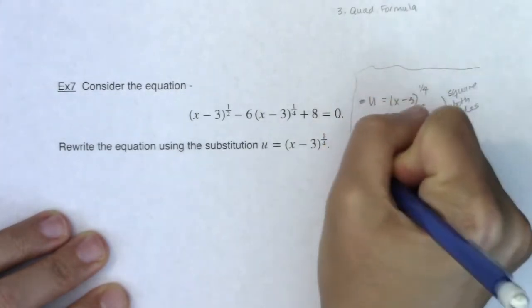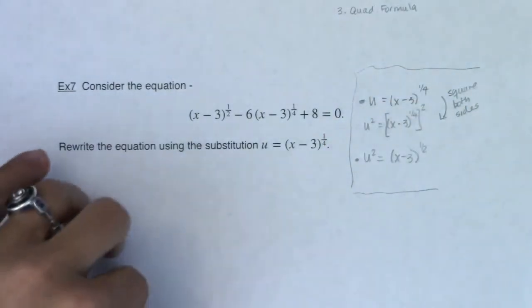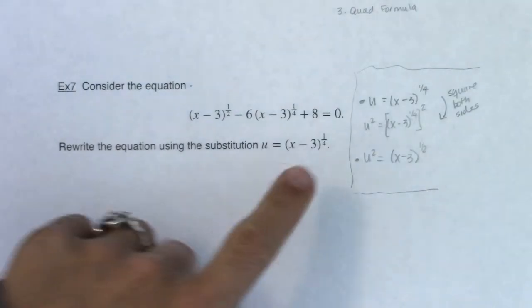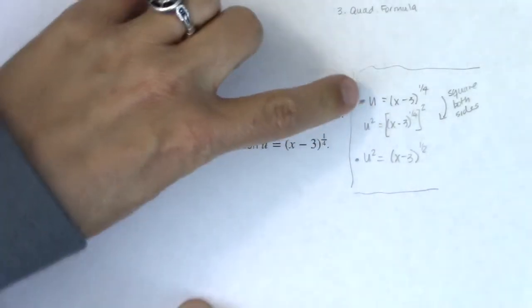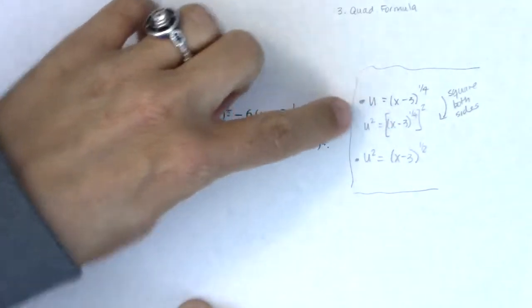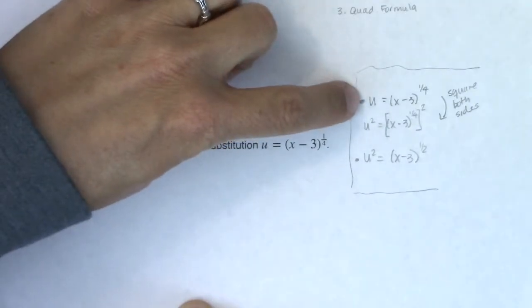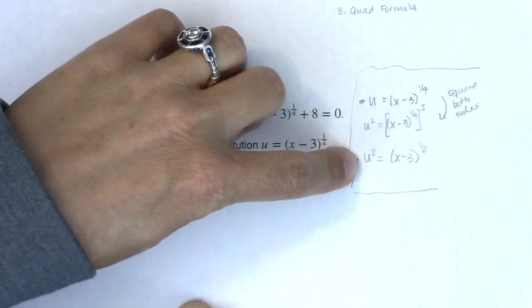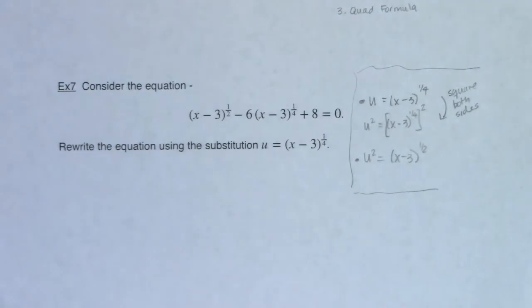So I want you to keep my starting point and my ending point in mind. I gave you this u sub and then you square both sides to see what you wind up with. I'll keep my original substitution in mind and I'll keep the squared version of that substitution in mind. And then let's go make our u sub. So here we go.